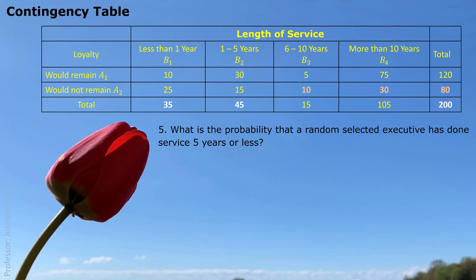Question 5: what is the probability that a randomly selected executive has served 5 years or less? Here we are talking about the whole table of 200 people. Five years or less contains two categories in the table — the first column and the second column. We add them together and divide by 200, giving us 40%.